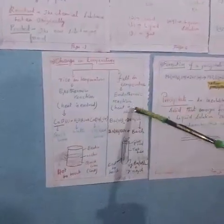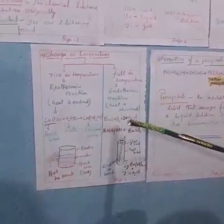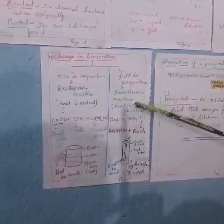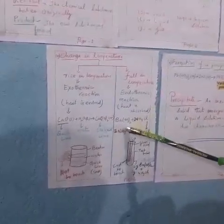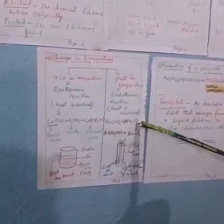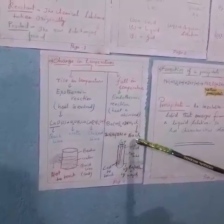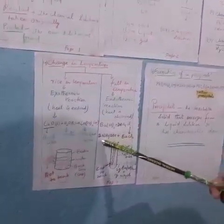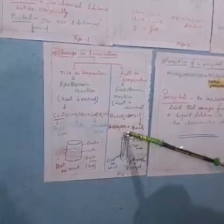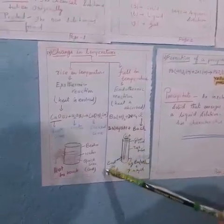The second one, that is endothermic, in which heat is absorbed, means when barium hydroxide reacts with ammonium hydroxide, then barium hydroxide and ammonium hydroxide are formed. This can be explained by taking in the test tube. While touching the test tube, we feel cool to touch.